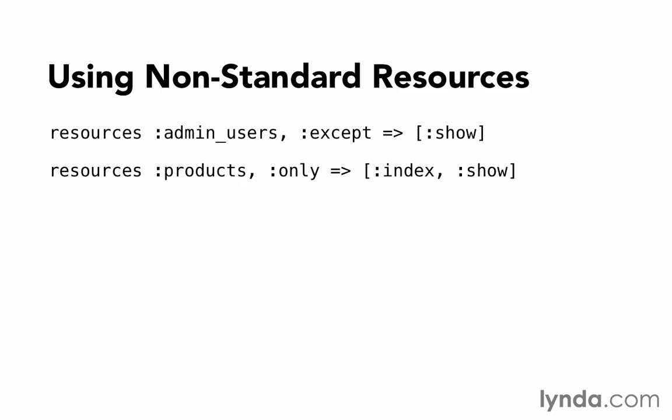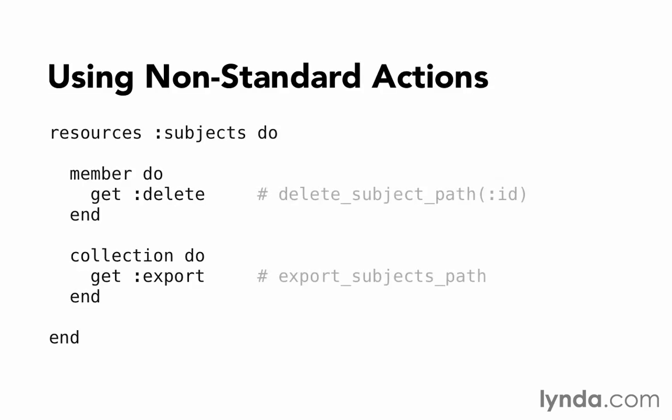Now in the case when we have resources which have additional actions that need to be supported, it's a little more complicated. We actually had this case in our subjects controller — I added a customization that would give us that delete action. That's not one of the standard actions; there are seven standard ones, but we had eight in our controller. So delete, I had to add by putting a block called `member` with a do/end, and inside specifying that it was going to be a get action called delete. That gave us the helper `delete_subject_path` with the ID that would route to the correct controller. The fact that it's in that block called `member` is important — it's saying that this is a route that is going to work on a member of this resource, a single item. That means it's expecting to get an ID in that case.